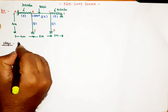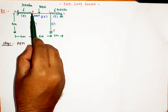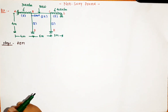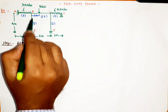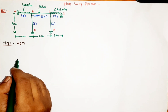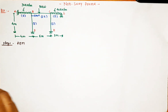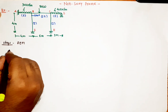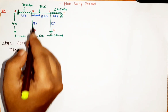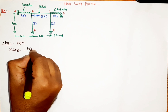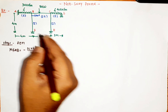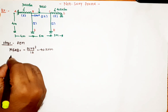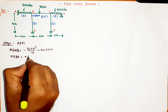The members are AB, BC, CD, BF, and CE. We need to find fixed end moments where there is loading, so we calculate for AB, BA, BC, CB, CD, and DC. For BF and CE there is no loading, so no need to calculate fixed end moments for those. For AB, M_f_AB with a UDL is -wL²/12, giving -30×4²/12 = -40 kNm. For BA, M_f_BA = +40 kNm.